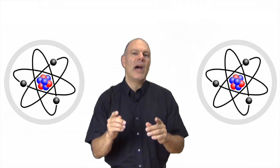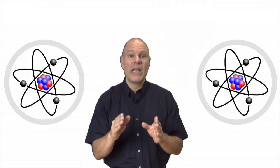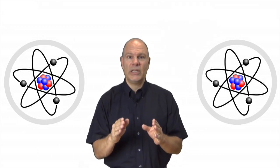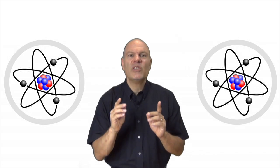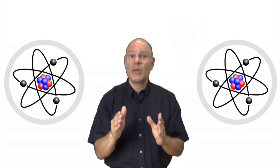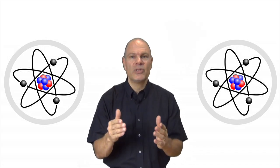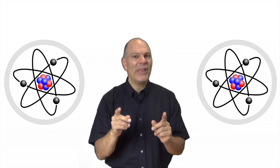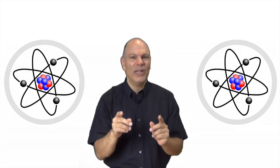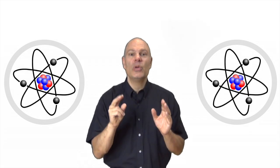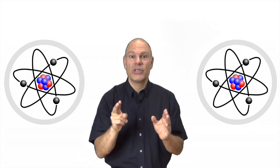As a biology student, you can get by with a simple model of chemical bonding that explains very well what happens when atoms combine to form molecules and compounds. Just pretend that atoms have feelings, and remember these two simple rules.